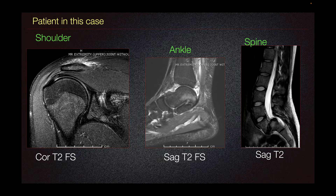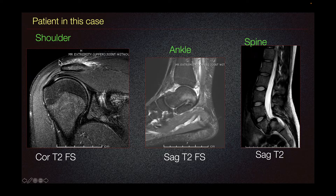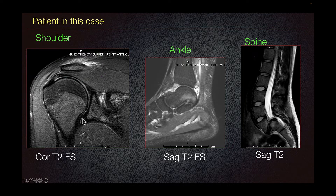The patient in this case presented with this imaging. On the most left-hand side, we can see a right shoulder MRI coronal T2 fat sat imaging showing some soft tissue edema and capsular edema of the acromioclavicular joint. There is no significant joint effusion.